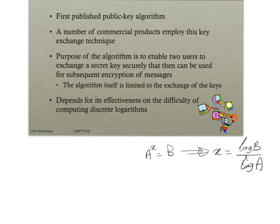But if I add to this problem something like a to the power x mod n equals b, and give you a, n, and b, then this is what we call the discrete logarithm. In order to get x, in many ways we have to resort to exhaustive search or an iterative solution.